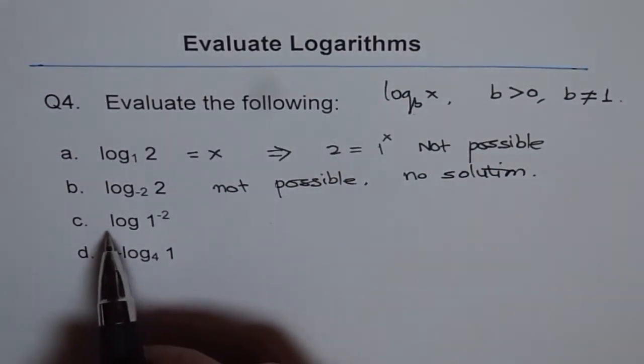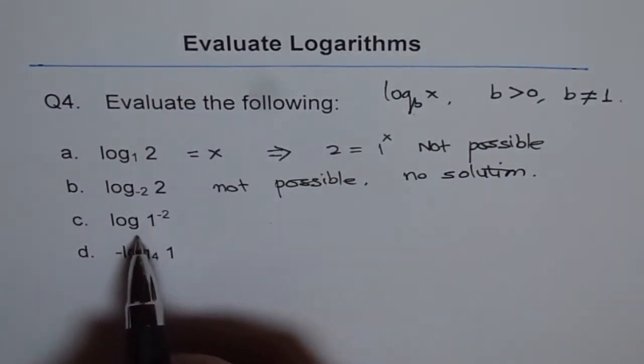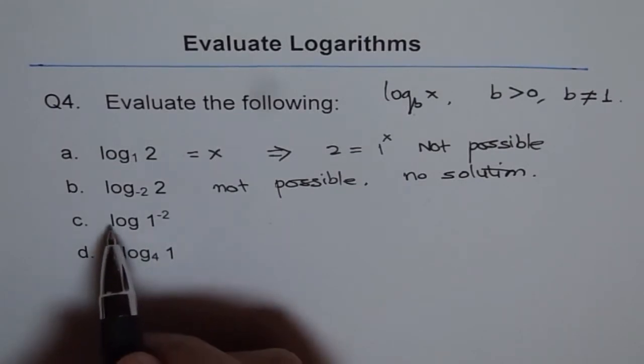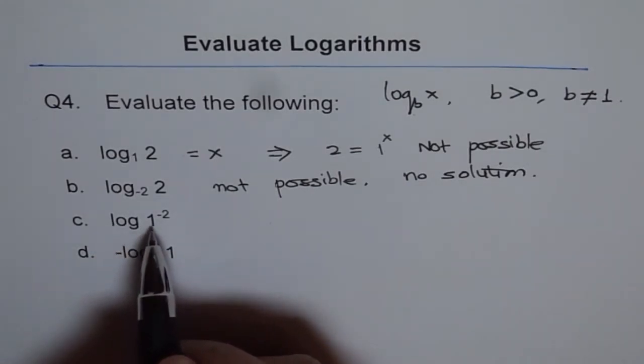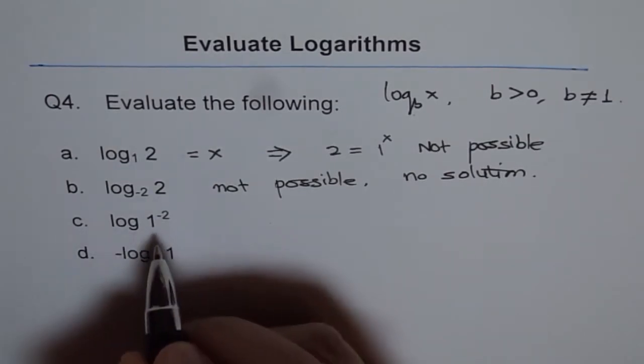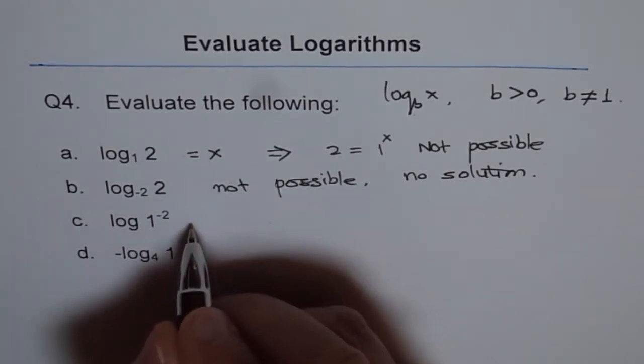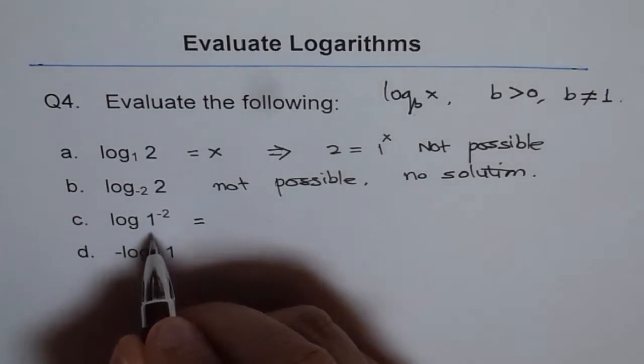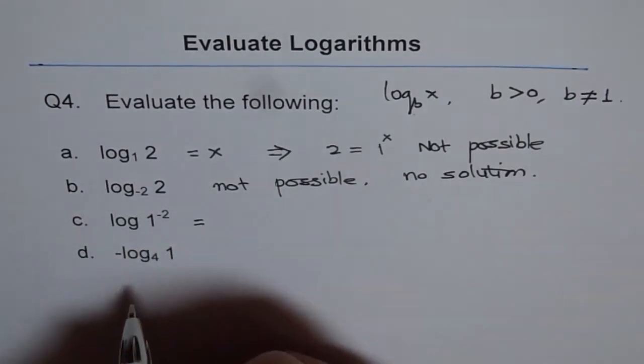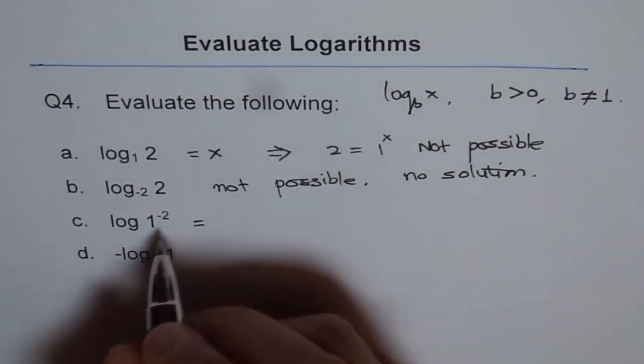Now, this is log to the base 10. If nothing is mentioned, the base is 10. Log to the base 10 of 1 to the power of -2. Now, what is this equal to? So let's try it out. You know log of 1 is always 0. Why is it so? Let's try to figure it out.